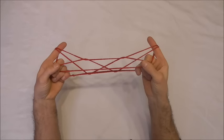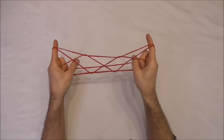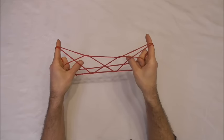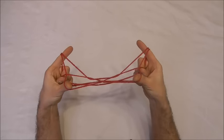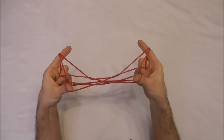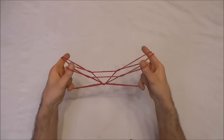Next I can insert my thumbs into that pointer finger loop and on the back of my thumbs I am going to collect that diagonal string and now I will release my middle fingers. And that should give us the 3D well.